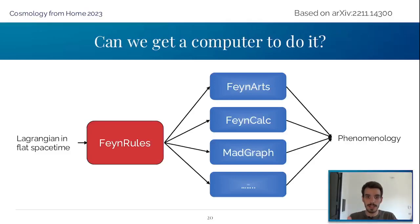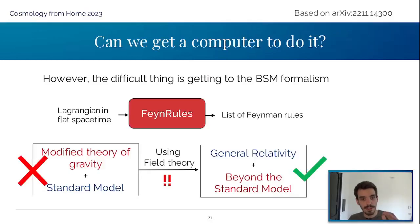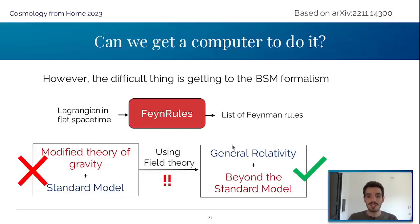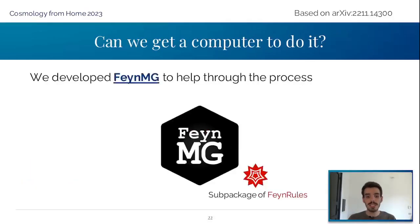So why don't we use these packages to study scalar tensor theories? It's very simple: these packages need a Lagrangian in flat spacetime, but the Lagrangian with flat spacetime is only reached after we take the beyond-standard-model limit — which requires actually going through the gravity calculation. Getting to that point was the difficult bit. Now it is easier because we have created the package FeynmG, which is a package for FeynRules that helps you along the way through all those difficult calculations.